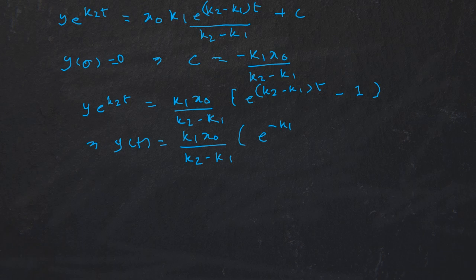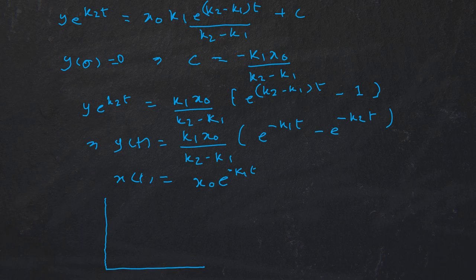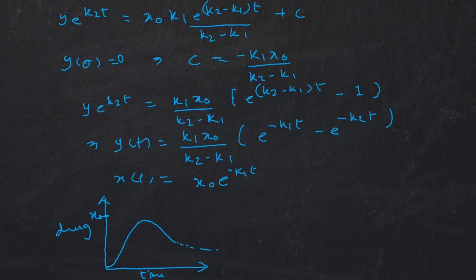This implies y(t) = k1·x₀/(k2 − k1) · (e^(−k1·t) − e^(−k2·t)), and we had x(t) = x₀·e^(−k1·t). Their graphs have time on the x-axis and concentration of drug on the y-axis. Starting at x₀, the GI tract curve decays exponentially, while the bloodstream curve rises then falls.